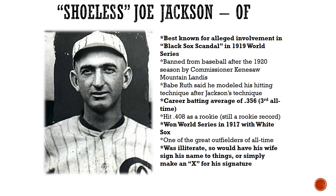Babe Ruth said he modeled his hitting after Joe Jackson. Jackson is still third all-time in career batting average with a .356 lifetime clip, and he hit .408 as a rookie — a rookie record. He helped the White Sox win the 1917 World Series. He grew up very poor, uneducated, and illiterate in South Carolina — his wife would sign his name to things, or he would simply make an X for his signature. Many people think that because he was uneducated and a naive, nice guy, he was roped into the scandal. Wherever the truth lies in the Black Sox scandal, unfortunately it brought down one of the game's greats.